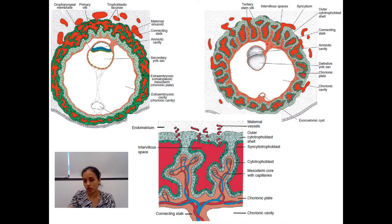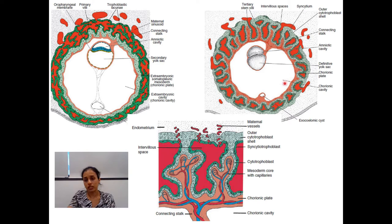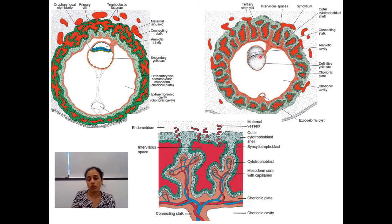The capillaries in the tertiary villi slowly make contact with capillaries developing in the connecting stalk. Initially the connecting stalk connects the developing embryo to the developing placenta; once blood vessels form within it, it is called the umbilical cord. All vessels in the tertiary villi have contact with the chorionic plate capillaries, which in turn connect with blood vessels in the connecting stalk and the intra embryonic mesoderm.